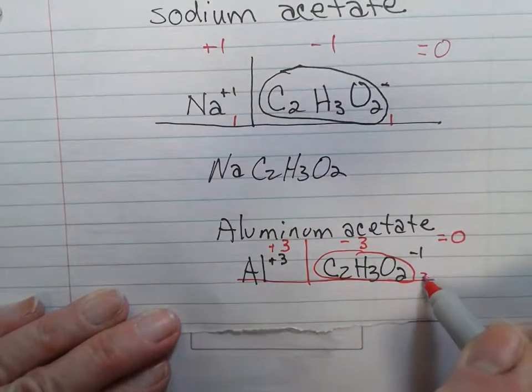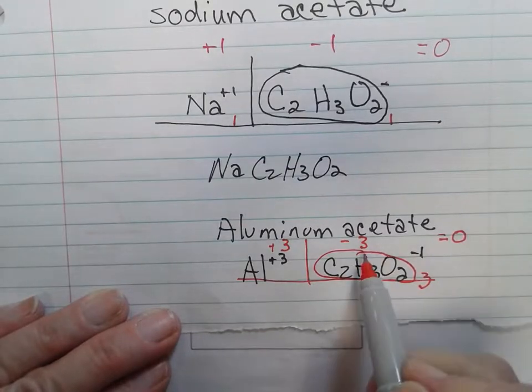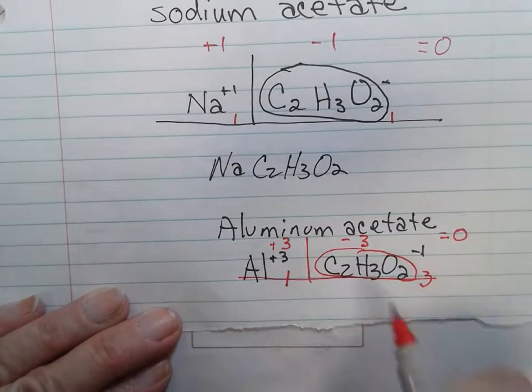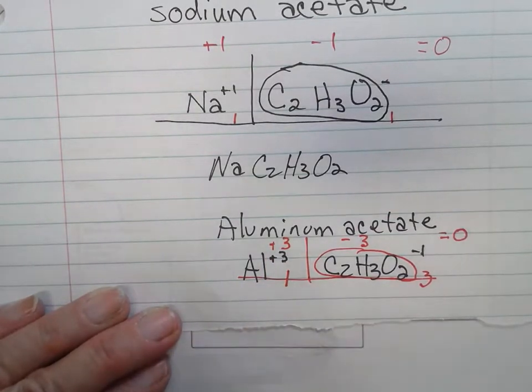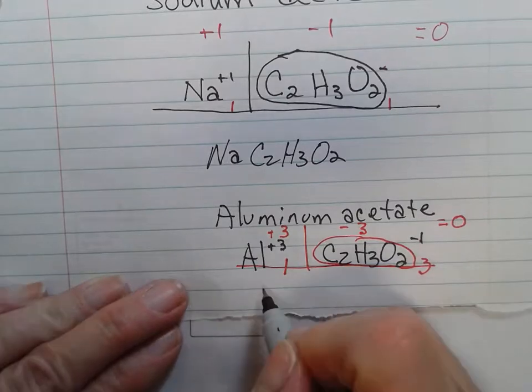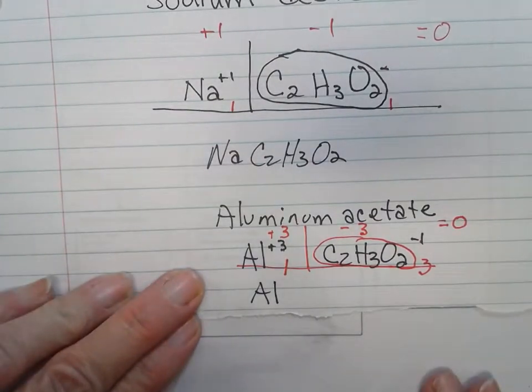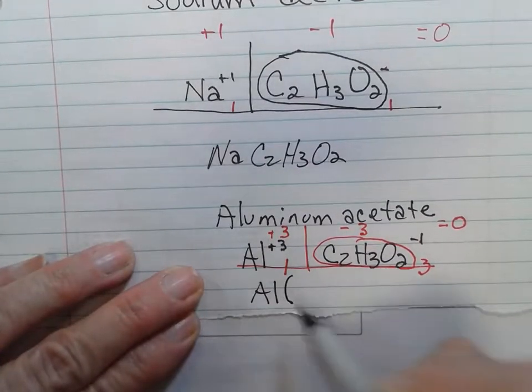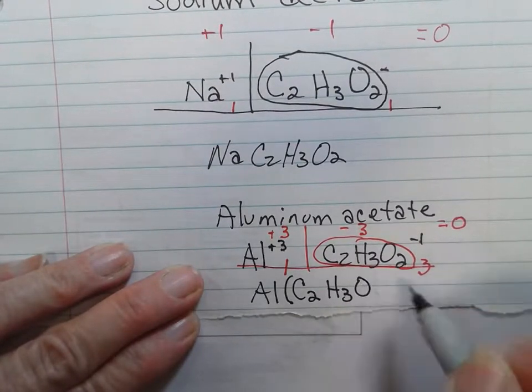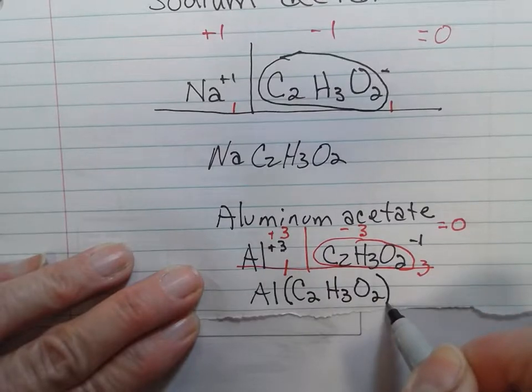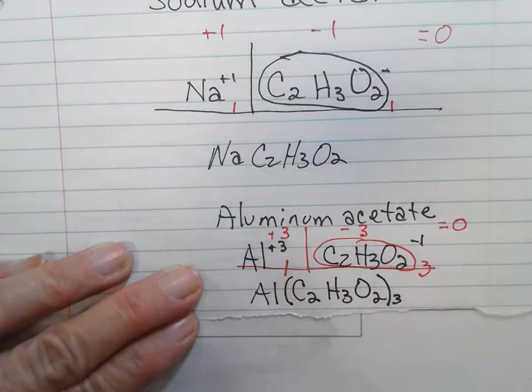Three times negative one will give me a negative three. One times positive three will give me a positive three. So now when I write this formula, I write Al, and in parentheses, C2H3O2, and I put the three outside of the parentheses.